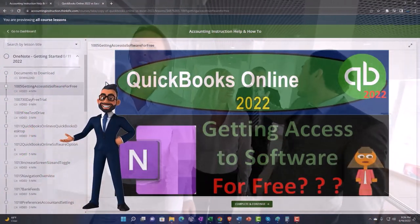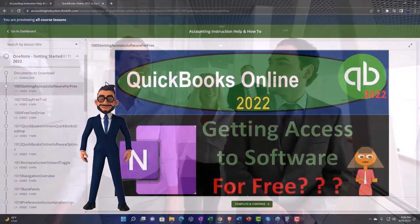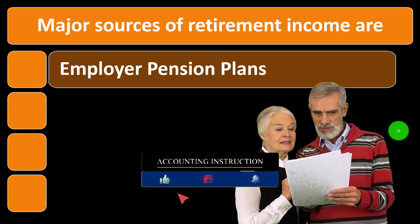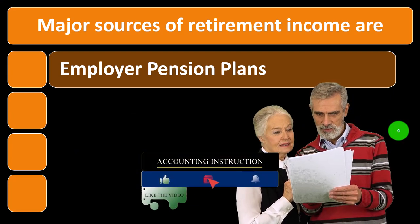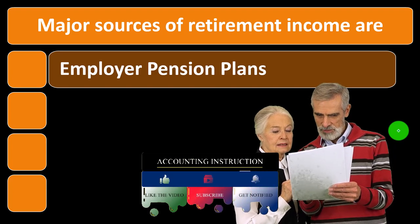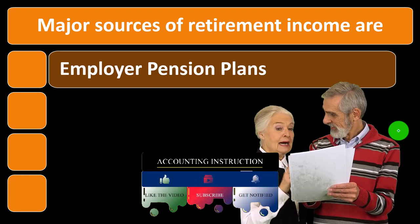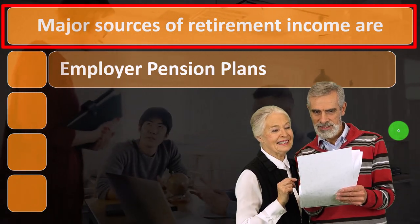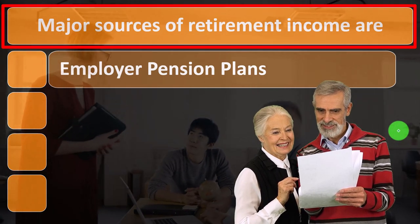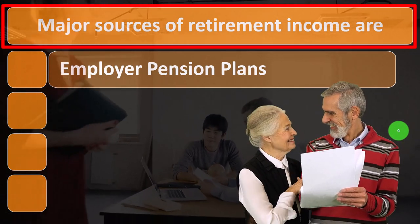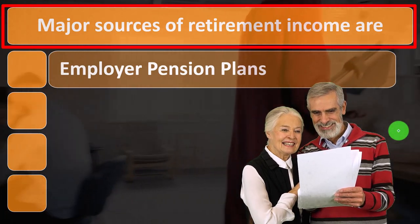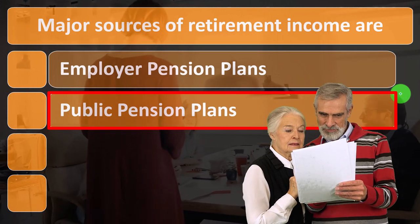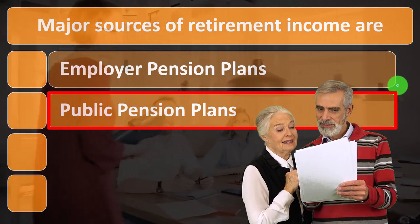In prior presentations we've been focusing on retirement planning. We talked about investment in general, different strategies and tools. Now we want to focus specifically on retirement planning, listing out the major sources of income we're typically going to be living on in retirement — including employer pension plans and public pension plans.